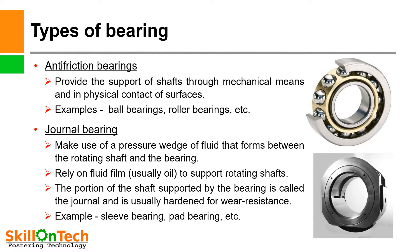Anti-friction bearings provide support to the shaft through mechanical means and in physical contact of surfaces. Examples are ball bearings, roller bearings, etc. The other important bearing used to take heavy loads is the journal bearing, which makes use of pressure waves of a fluid film that forms between the rotating shaft and the bearing.